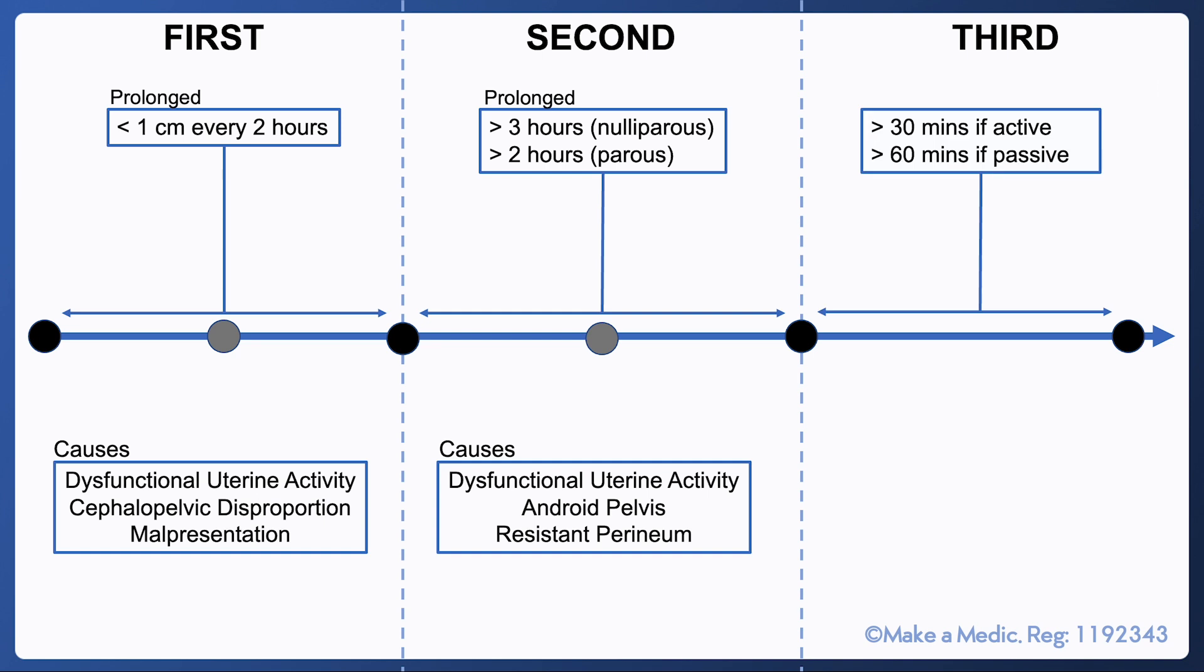The third stage is defined as prolonged if it's lasted more than 30 minutes if active management is opted for, or more than 60 minutes if passive management is chosen. The most common causes are uterine atony where the uterus fails to contract down on itself after delivery, and it can also be due to placental abnormalities such as placenta accreta.